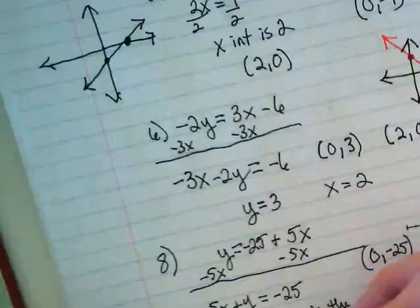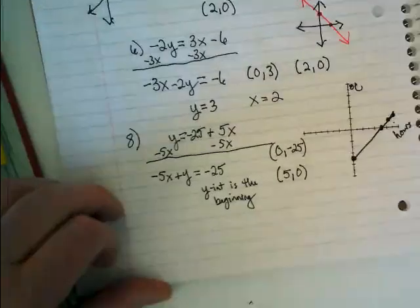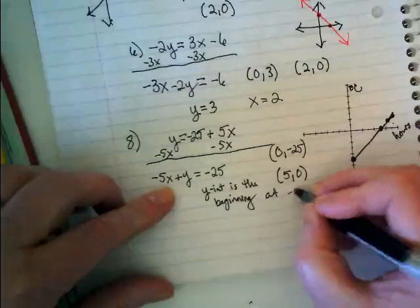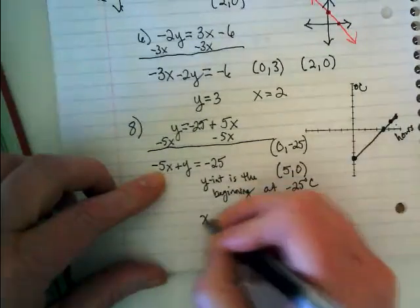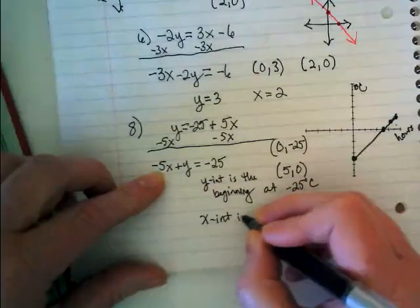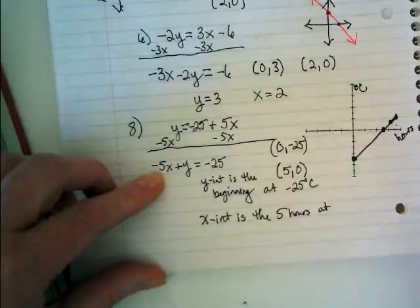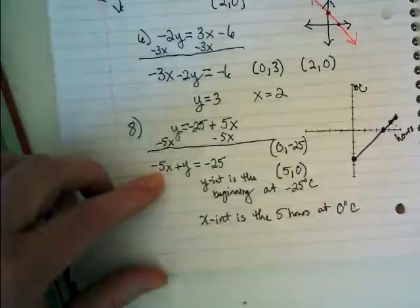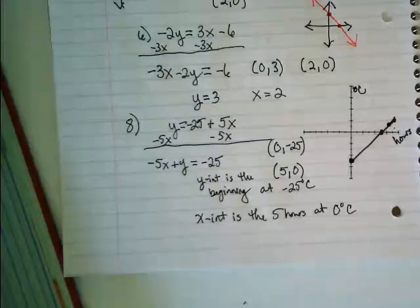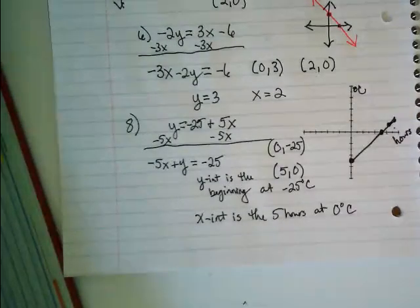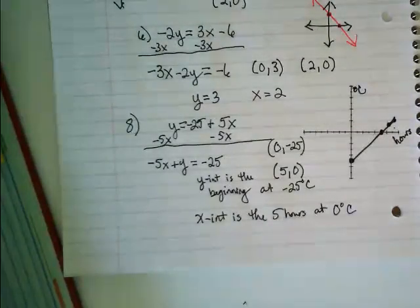The y-intercept is the beginning at negative 25 degrees Celsius. The x-intercept is the 5 hours at zero degrees Celsius. That's how you would answer the A and B of that question. A, intercepts and graph. B, what does the graph mean? What's happening at those points on the graph?